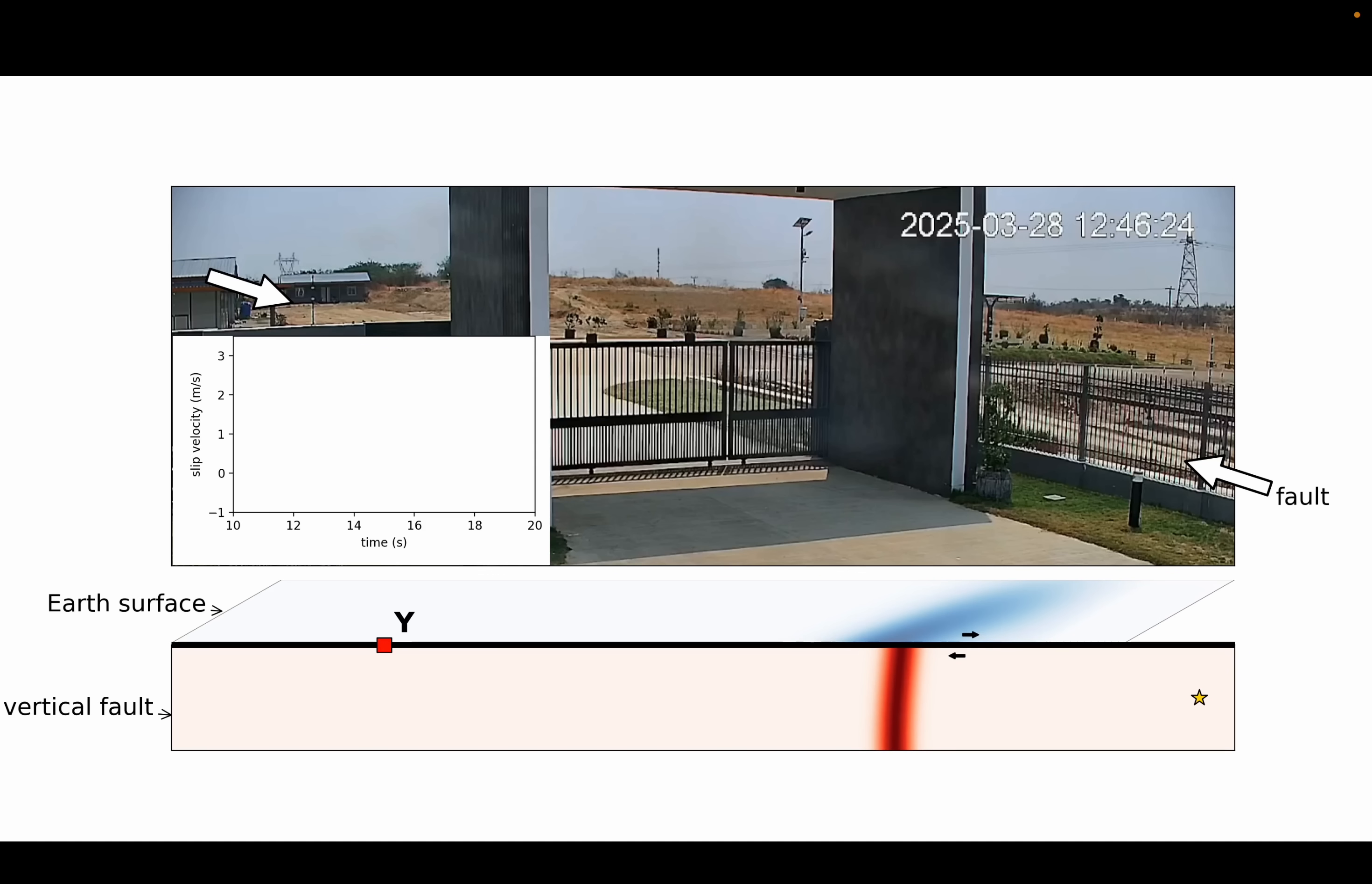This video explains how an earthquake rupture traveled past the CCTV camera and was captured on film for the first time.